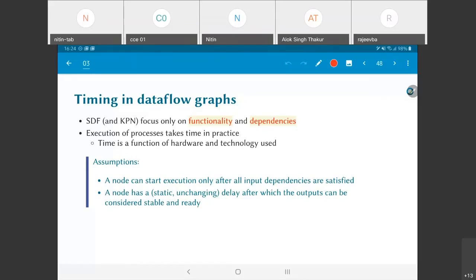So we will make certain assumptions. One of them is that, just like we do for the firing of nodes, but now with time being brought into the picture, we are going to assume that a node can start execution only after all its input dependencies are satisfied. And the second thing that you are going to assume is that a node has a delay associated with it. After that amount of delay, the outputs of that node can be considered to be stable and ready.